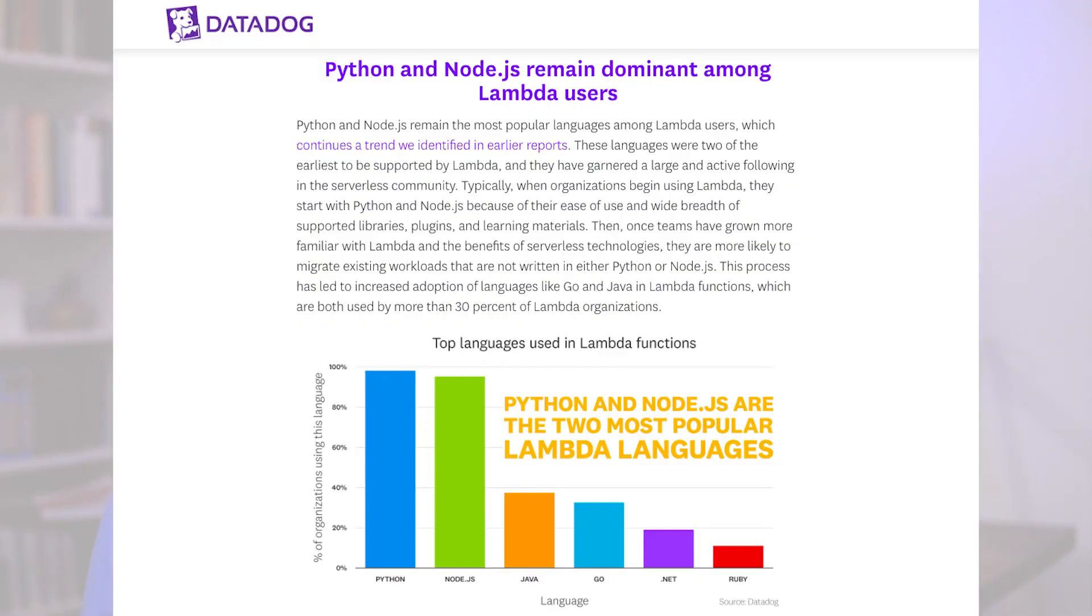AWS Lambda supports multiple programming languages, including Node.js, Python, Java, Go, Ruby, and C sharp. This makes it easy to build and deploy your code in the language of your choice. While you can use any of these languages, according to the Datadog 2022 state of serverless report, Python and Node.js are the dominant programming languages among Lambda users today.